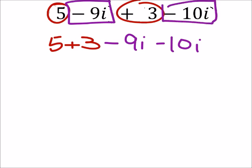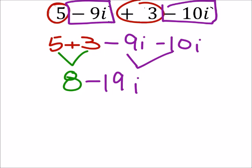Now I can combine these. Five plus three is eight, and this is going to have an i with it. Negative nine minus ten would be a negative nineteen. So eight minus nineteen i.